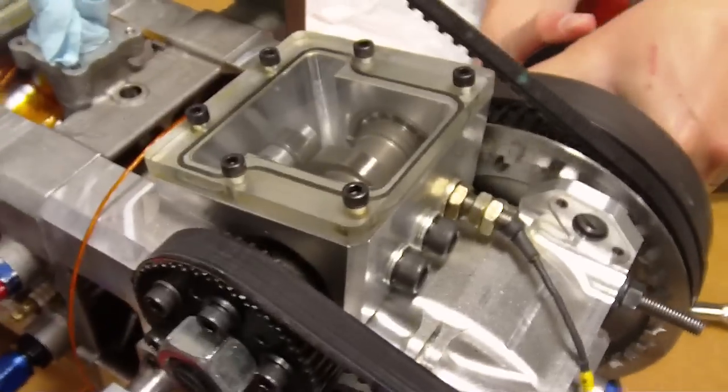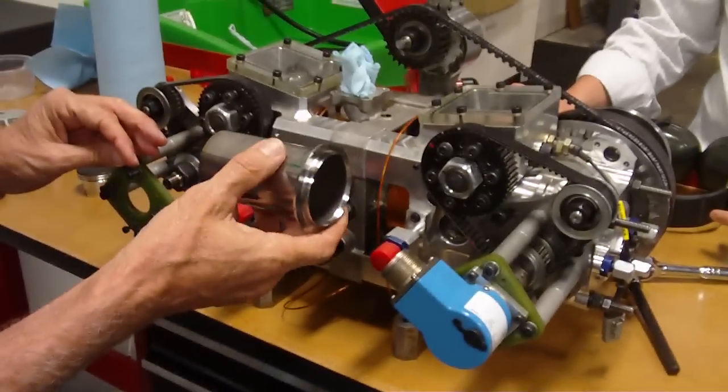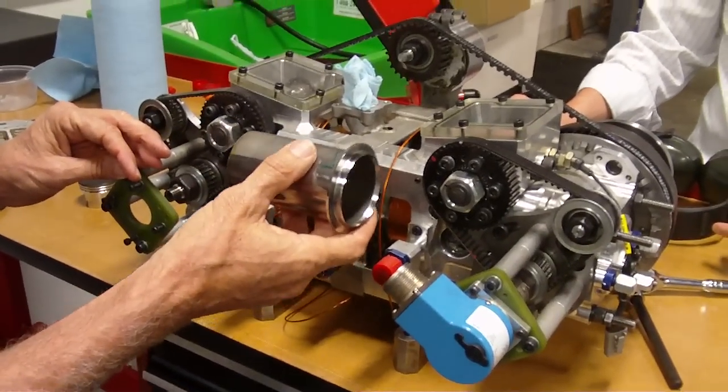It's just that instead of the shape of the poppet valve being in a traditional cylinder head, we're using the cylinder wall itself as the valve to control that motion.